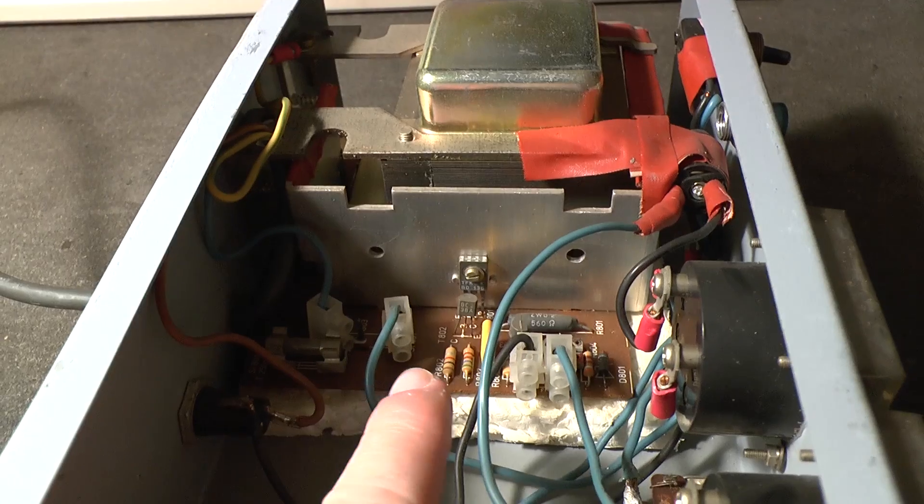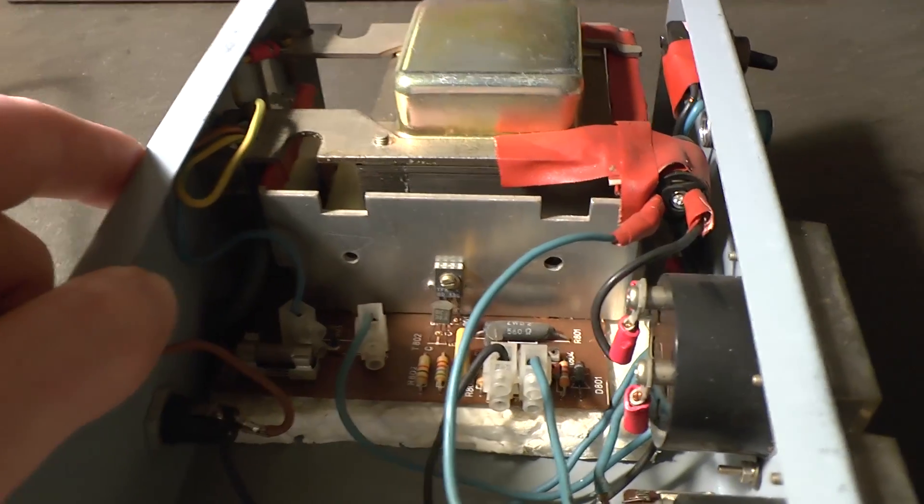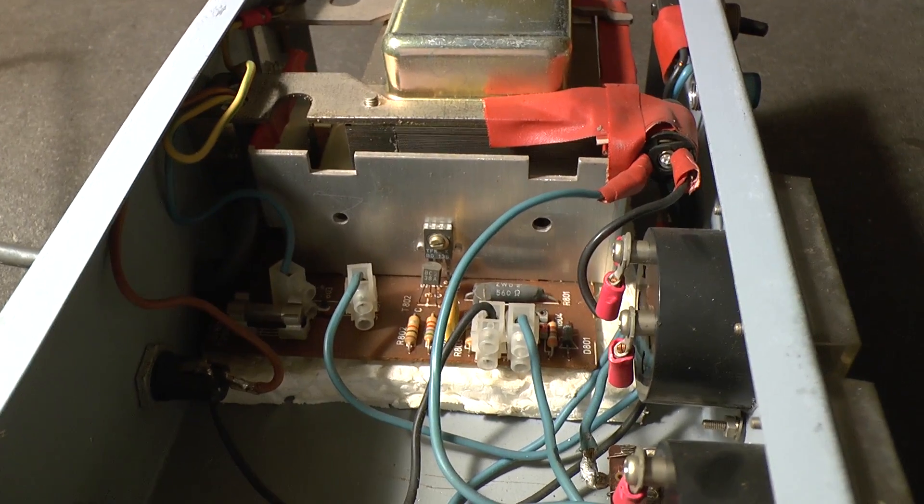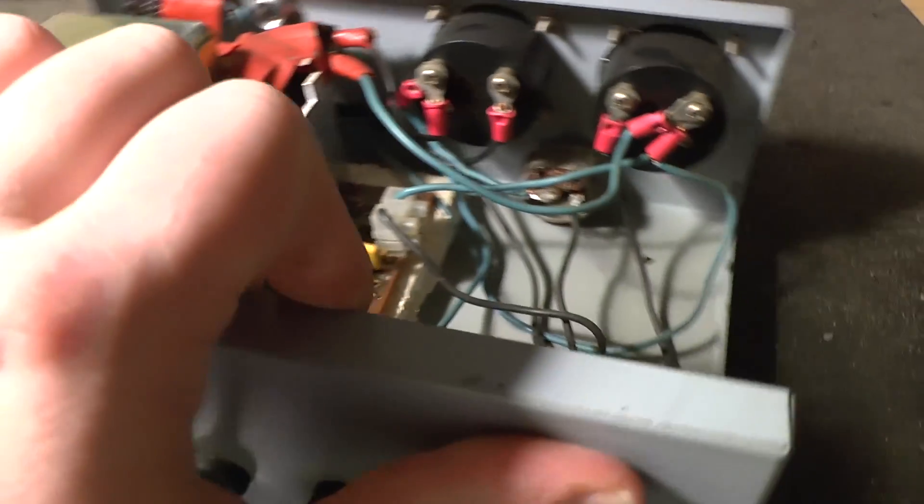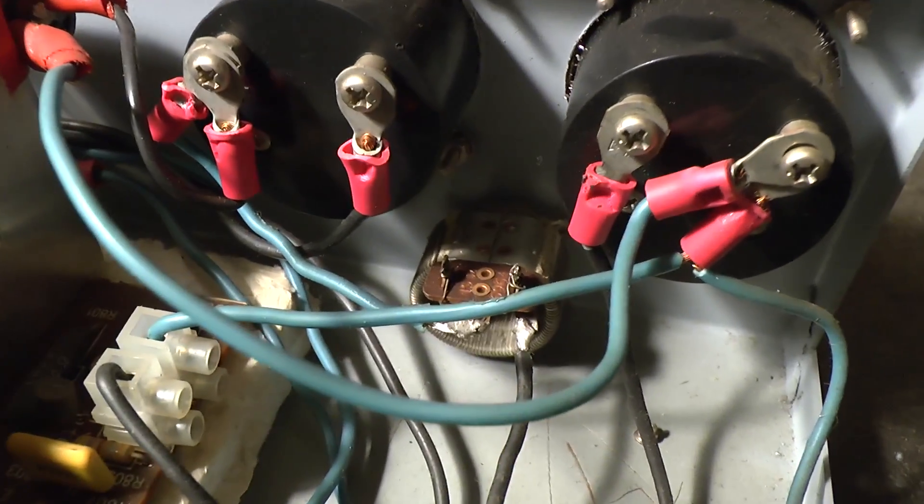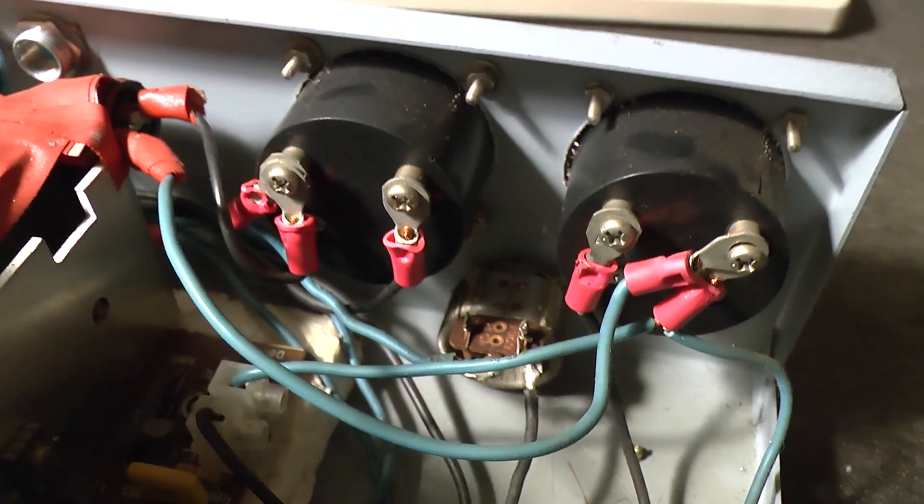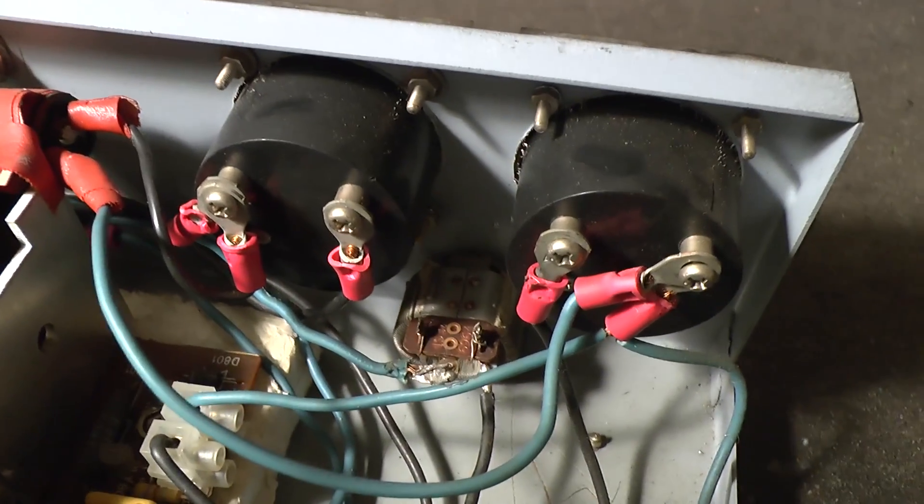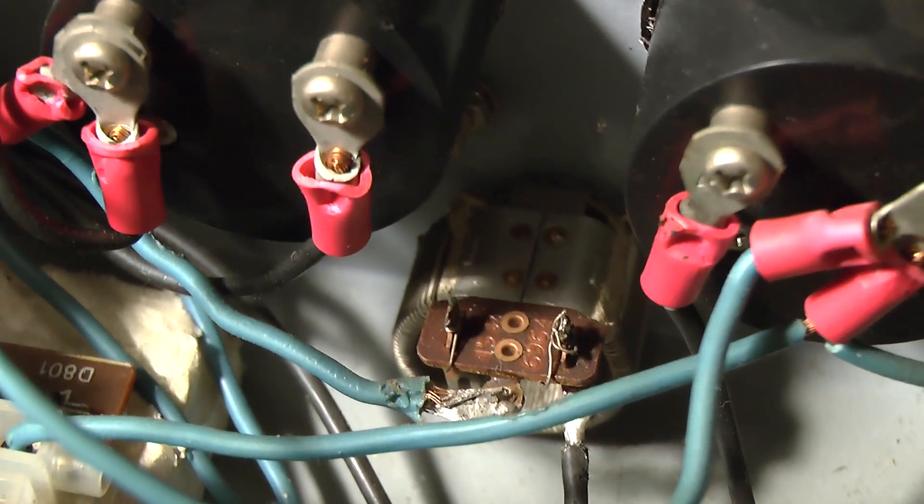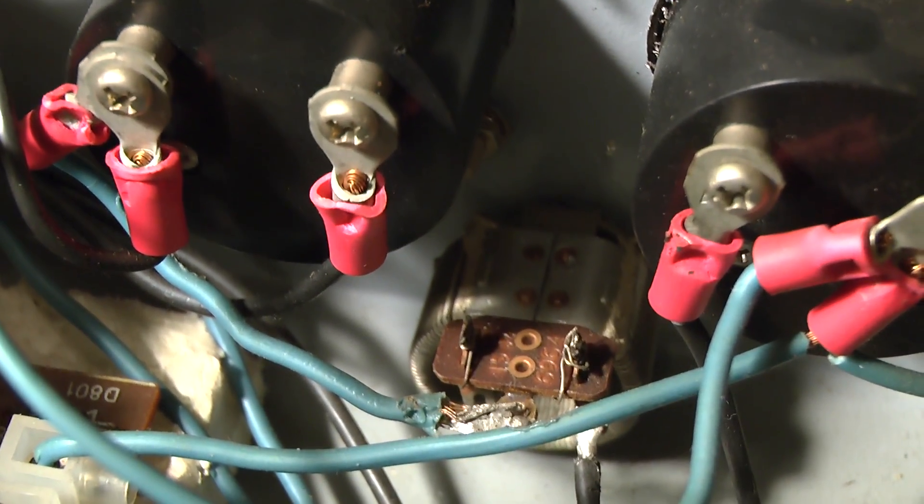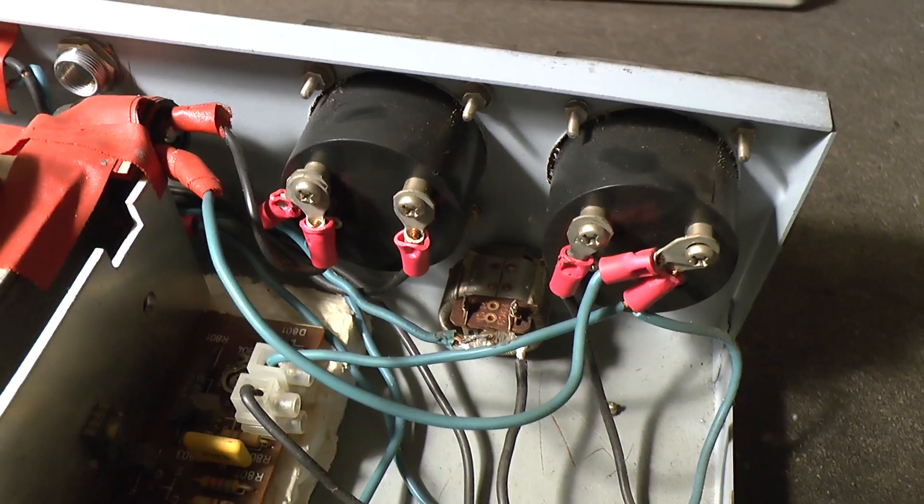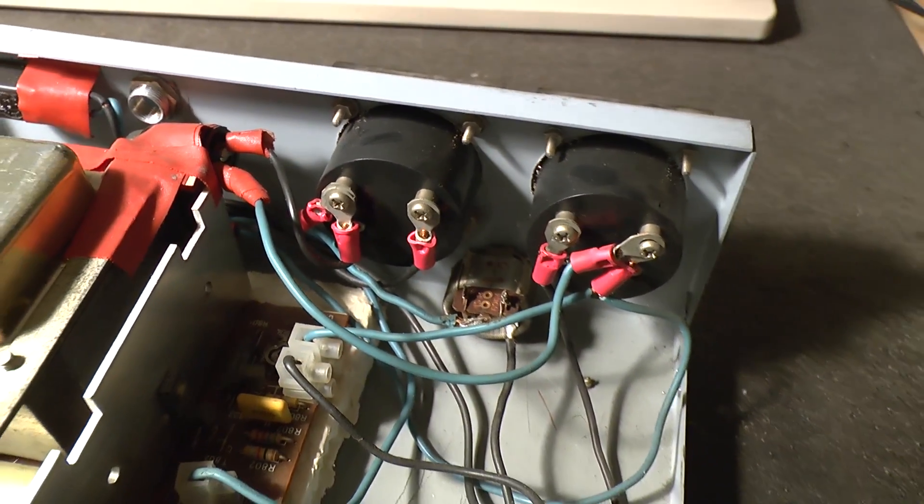Now the problem is this is a constant voltage power supply. What they did in order to make this variable is they hooked up this rheostat, this high power potentiometer, in series with the output. This is quite a lovely little wire wound rheostat. Seems to have some asbestos in there so that's not going into the parts bin.